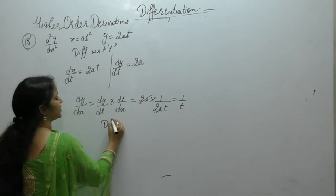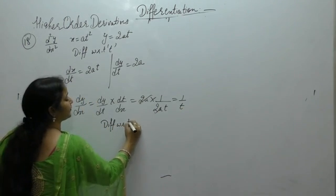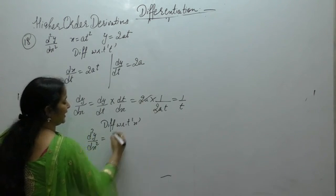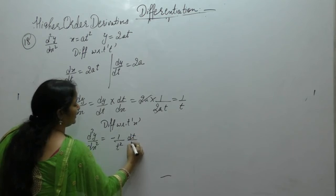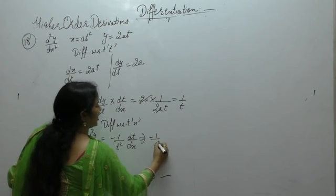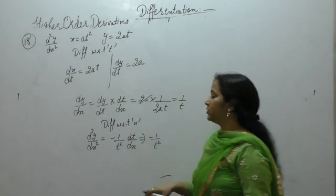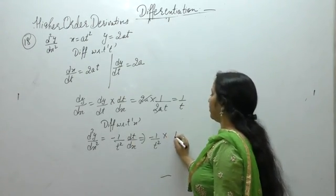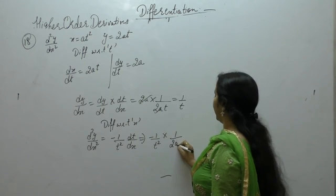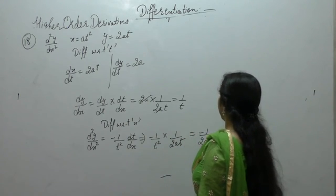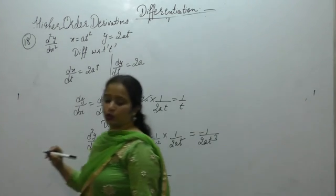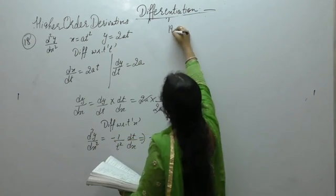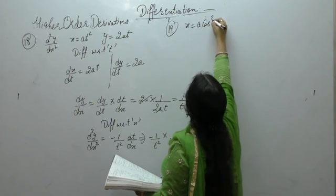Now differentiate dy/dx with respect to x. The derivative of 1/t with respect to t is minus 1/t², then times dt/dx. Since dx/dt equals 2at, we have dt/dx equals 1 upon 2at. So we get d²y/dx² equals minus 1 upon 2at³.